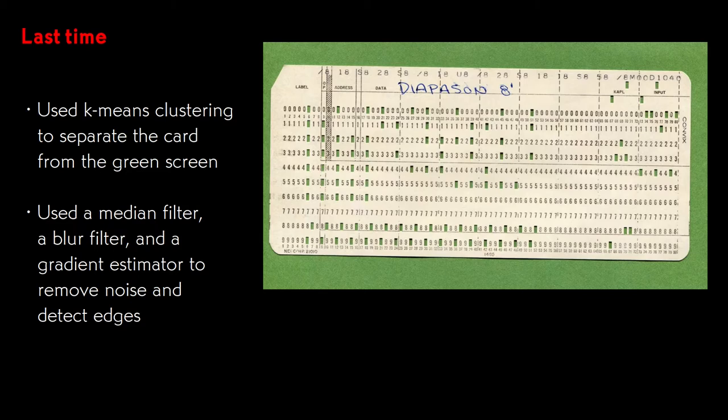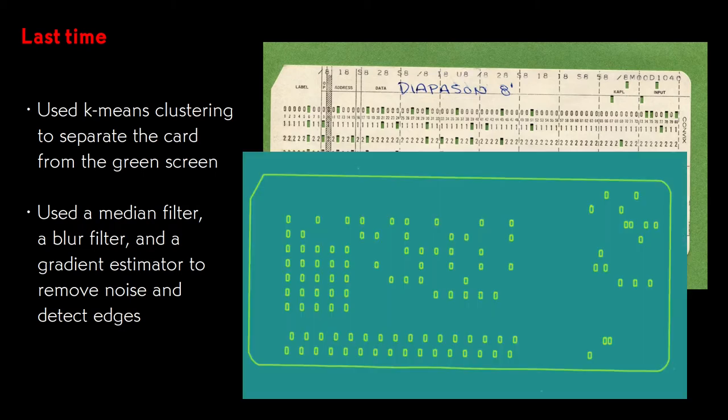In the last couple of episodes, there's a link somewhere nearby, we scanned a card, used k-means clustering to separate the paper from the green screen, and then used median filtering, blurring, and gradient estimation to remove noise from the image and detect the edges. We now have an image with strong lines drawn at the edges of the paper. Let's get to work on finding the rectangle of the card.